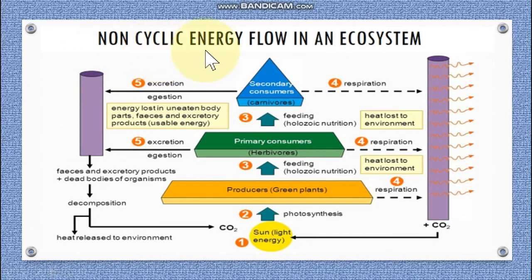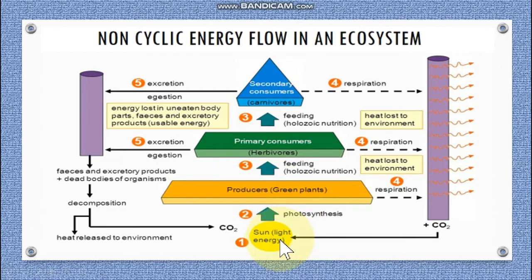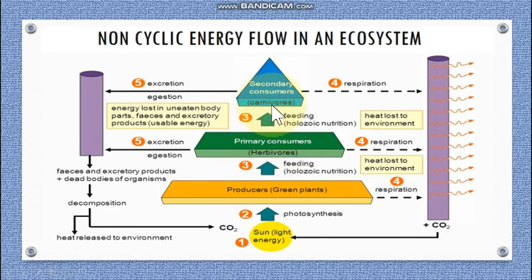Now let's study the non-cyclic energy flow in an ecosystem. The sun is the main source of energy on planet earth. The light energy of the sun is used by green plants, which are the producers. They convert this light energy into chemical energy by the process of photosynthesis. These producers are eaten up by the primary consumers, which are the herbivores. These primary consumers are then eaten up by carnivores — for example, lion, cat, dog, crocodile, or snake — which are the secondary consumers. So food is transferred from producers to primary consumers and then to secondary consumers.